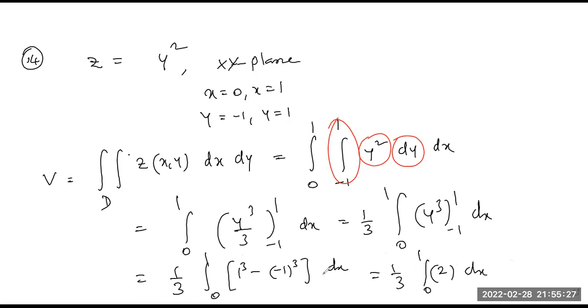That's 1 plus 1 equals 2, so 2 by 3 integral 0 to 1, 1 dx. So 2 by 3, x evaluated at the limits 0 to 1, upper limit minus lower limit. So the volume is 2 by 3.